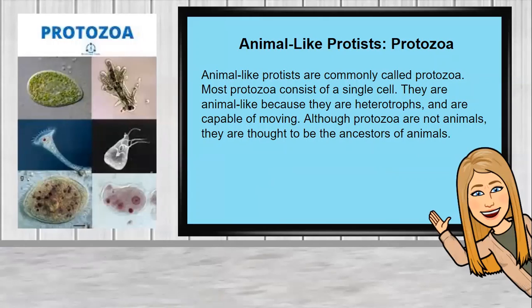We're going to compare how a protist is like an animal for this first slide. Animal-like protists are commonly called protozoa. Most protozoa consist of a single cell. They are animal-like because they are heterotrophs and are capable of moving. A heterotroph means they have to obtain their energy by eating something else — they do not make their own food. They have to self-feed off of living or once living organisms. They have special parts of their cellular structure that allow them to move. Although protozoa are not animals, they are thought to possibly be the ancestors of animals.